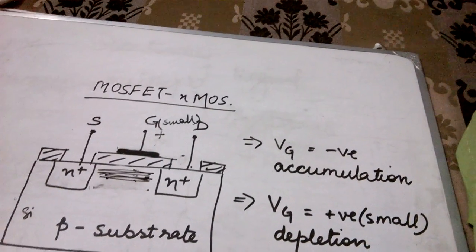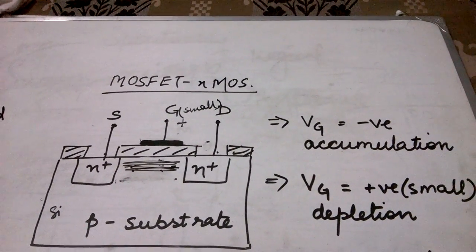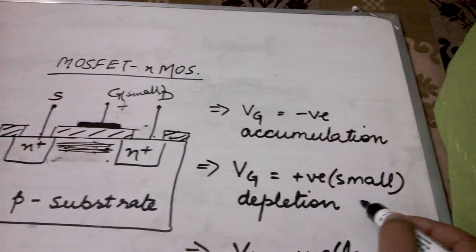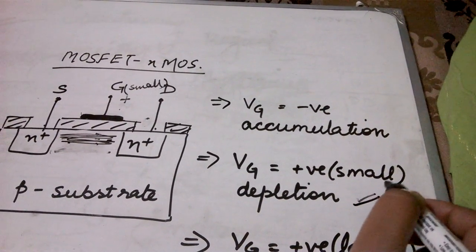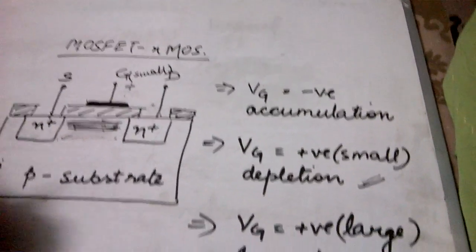A depletion region is a region which is devoid of any charge carriers. Hence, again in the depletion mode, no conduction will take place in the MOS device.